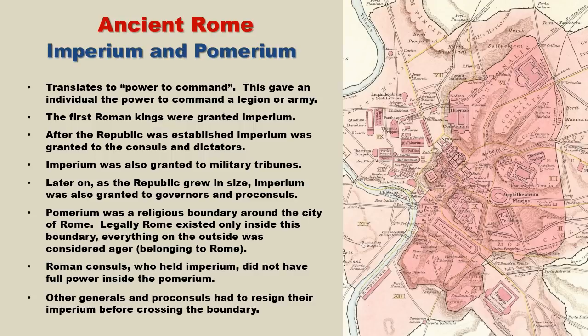Roman consuls, however, were exempt from this law. They still held their Imperium, but their powers were greatly reduced. There's an interesting aspect to this in Roman history: during the alliance between Caesar, Pompey, and Crassus, Pompey did not want to leave Italy but still wanted to retain command over his legions, meaning he could not go inside Rome or he would have been forced to resign his Imperium. Pompey didn't want the consulship either, as he didn't want to be troubled with day-to-day consular duties. So to get around this, he stayed at a plush villa just outside of Rome, which allowed him to keep his Imperium in case he needed to issue orders to his legions.